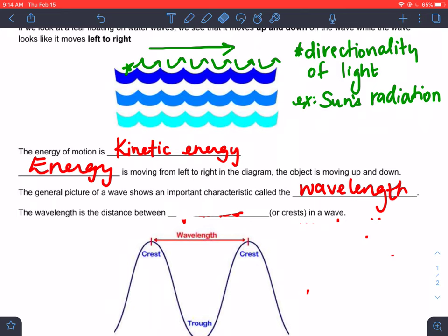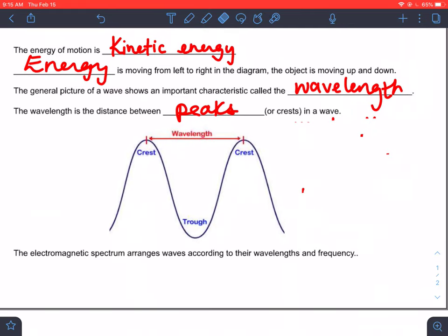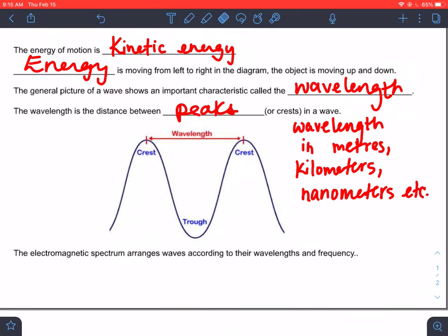This generally allows us to form a picture or an idea of what we call wavelength. The wavelength is the distance between the peaks or the crests of the wave. Wavelength can be measured in meters, kilometers, nanometers—we'll keep it metric because that is going to be your standard notation of measurement.